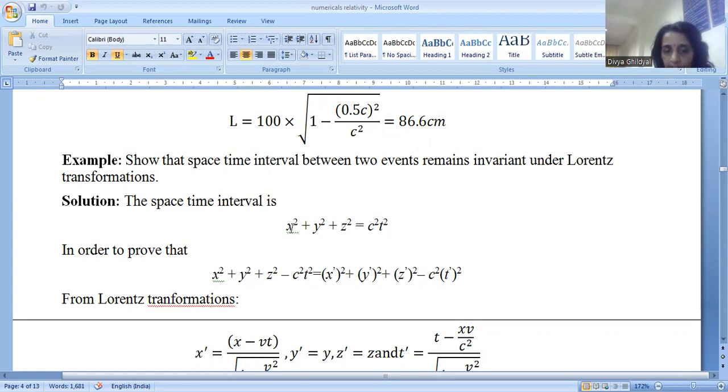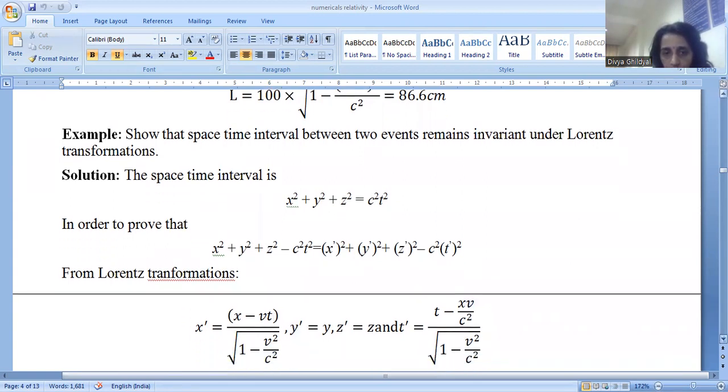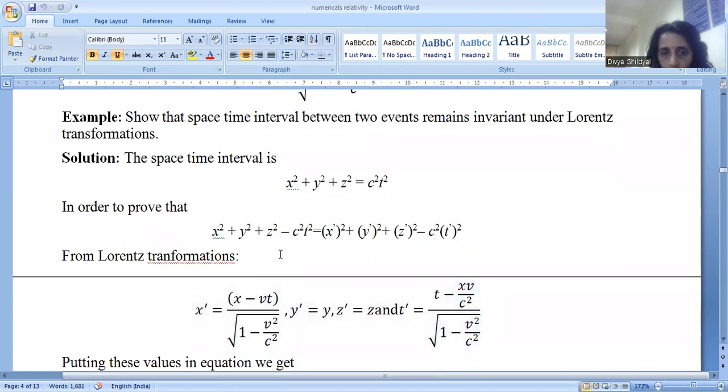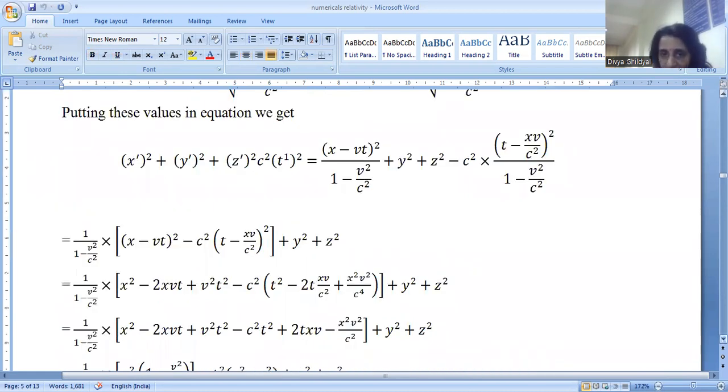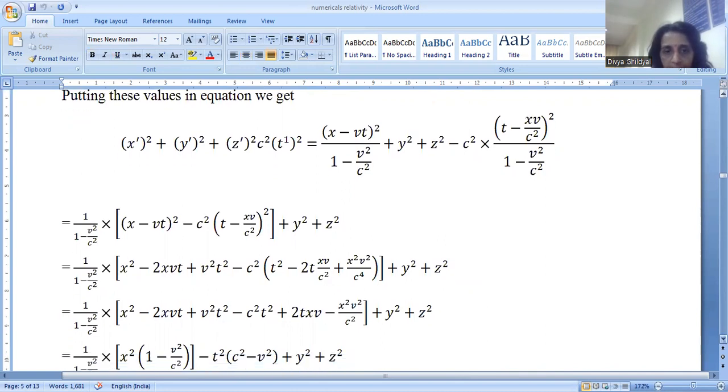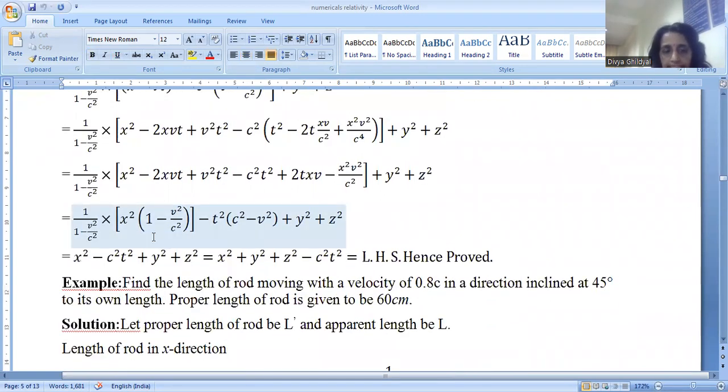In order to prove that they remain invariant under Lorentz transformation, what we will do is in this expression, instead of x, we will write from LT transformation equations: x dash is equal to x minus vt upon under root 1 minus v square by c square, y dash equal to y, z dash equal to z, and t dash equal to t minus xv by c square under root 1 minus v square by c square. And putting these values in the expression above, solving it in a very simple manner by squaring and cancelling the terms, we get the same expression as right hand side. So left hand side becomes equal to right hand side.